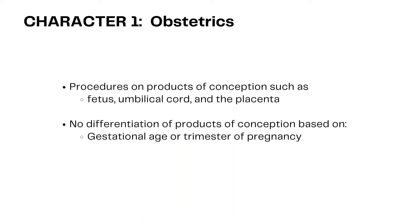The obstetric section contains codes for procedures on products of conception, such as the fetus, the umbilical cord, and the placenta. There is no differentiation of products of conception based on gestational age or trimester of pregnancy. Gestational age and trimester of pregnancy are only found in ICD-10-CM for diagnostic coding, and not in the ICD-10-PCS.